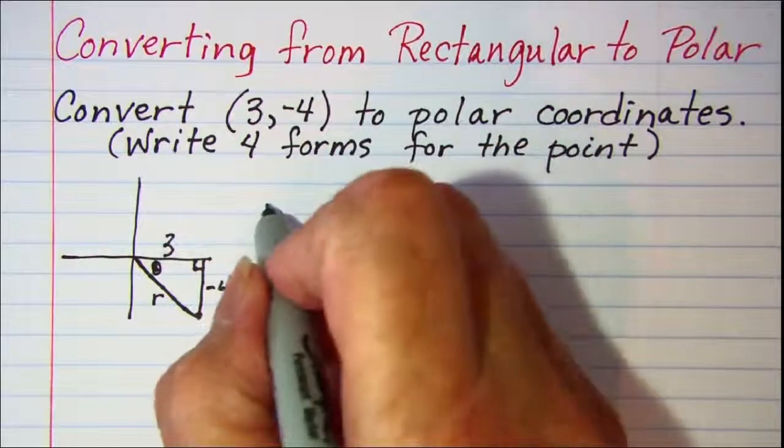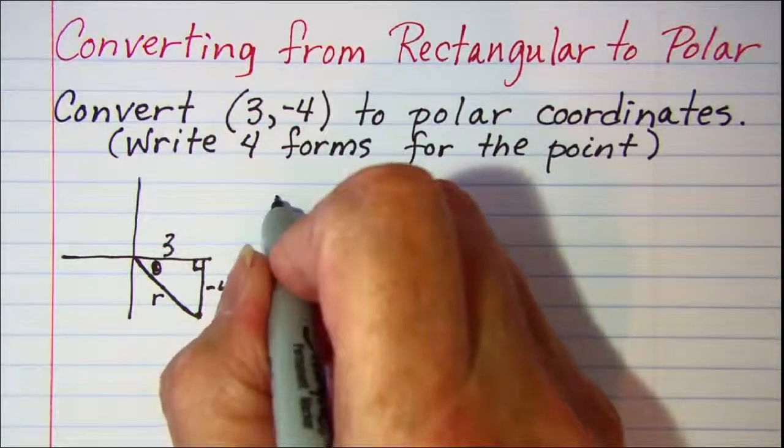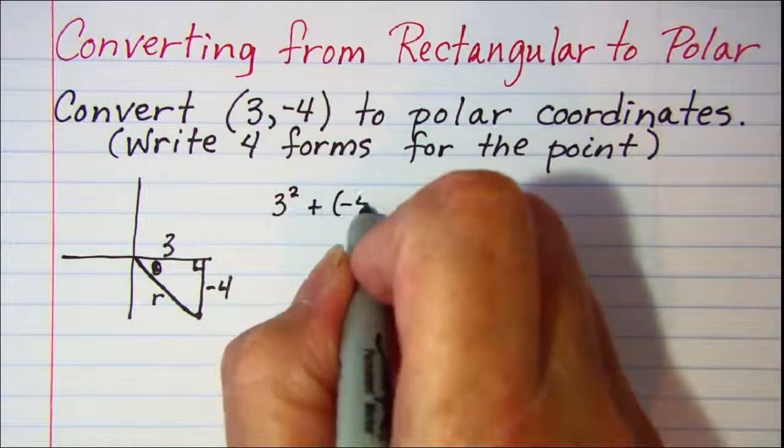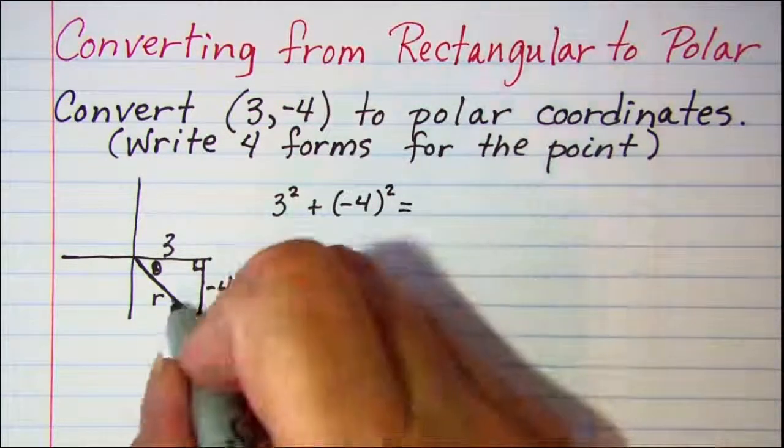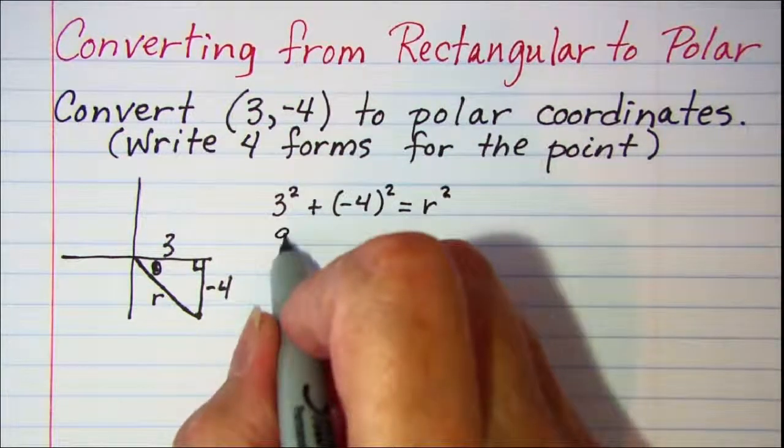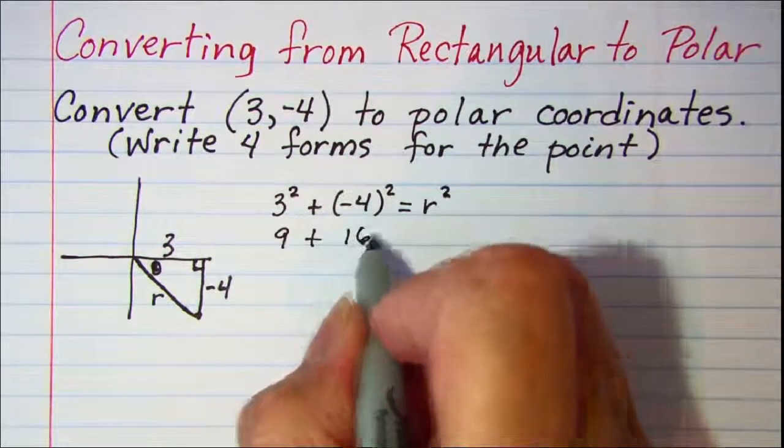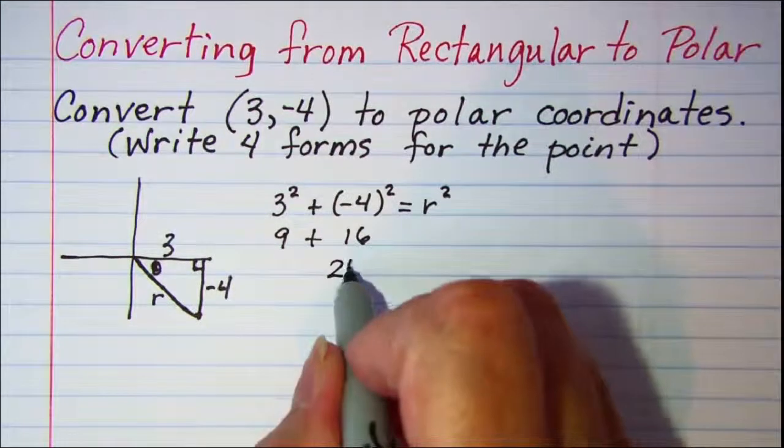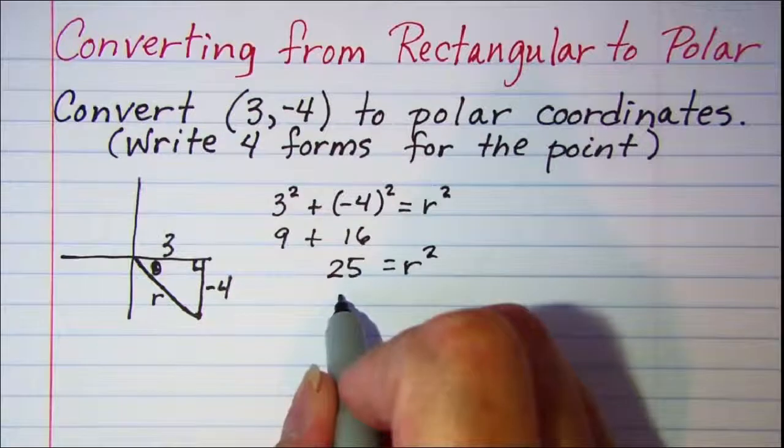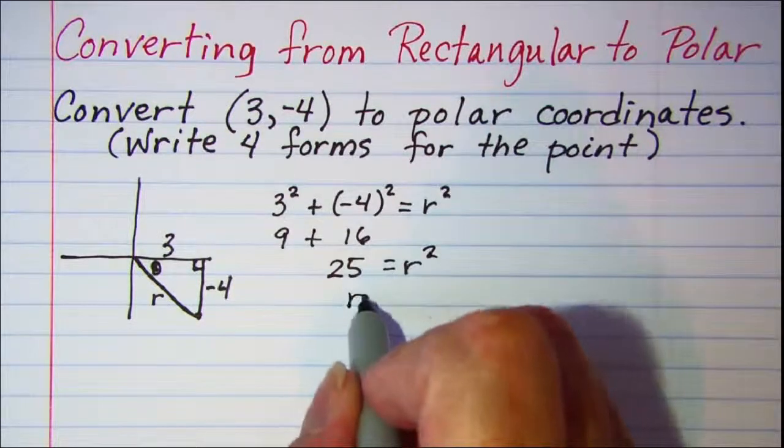But let's go ahead and use the Pythagorean theorem. We have 3² + (-4)² = r². So 9 + 16 = 25 = r². Which means when we square root both sides, r = 5.